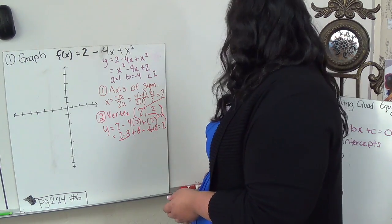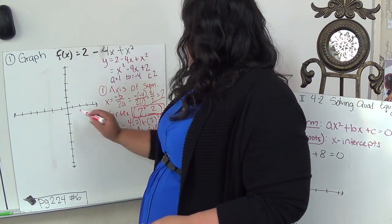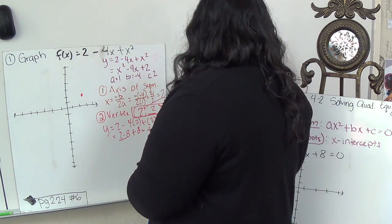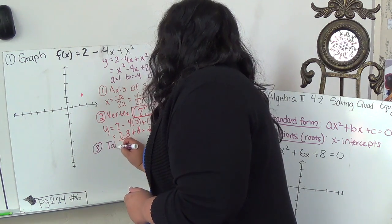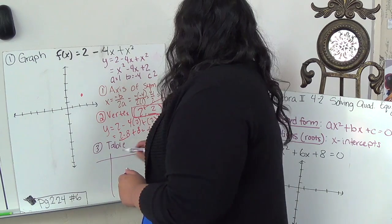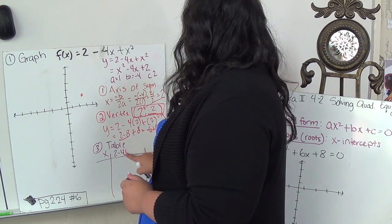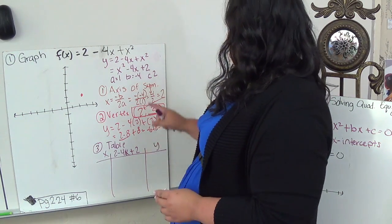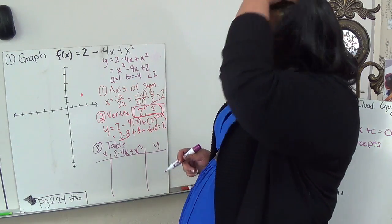So once we find my vertex, I'm going to locate my vertex, which is 2 comma negative 2. This is my vertex. So my next step is now to create a table. Just like the one that I used for lines, I'm going to have my x and I'm going to have the equation 2 minus 4x plus x squared and then my y. I can use this one or this one. It doesn't matter.